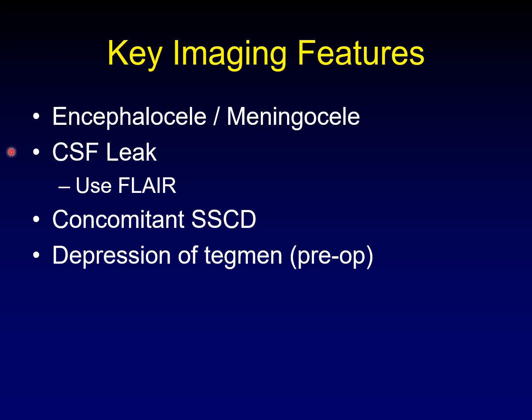The key imaging features to evaluate when assessing the tegman: whether there is an encephalocele or meningocele with intracranial content down into the ear; whether there is CSF leak from dural failure; concomitant superior semicircular canal dehiscence (since thinning the tegman likely also thins the superior canal covering); and depression of the tegman, particularly laterally, which is important for preoperative planning for cochlear implantation.